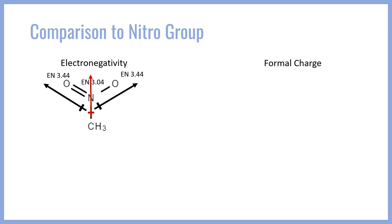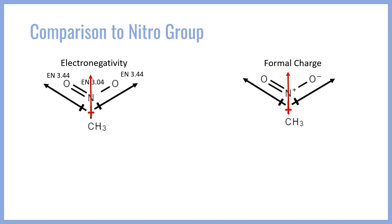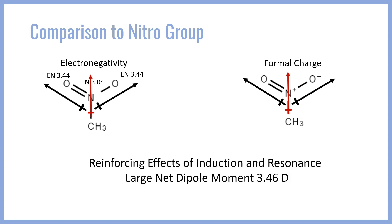Now, if we consider formal charges for the nitro group, nitrogen carries a formal positive charge and oxygen carries a formal negative charge. Due to the equivalency of the two N–O bonds, either oxygen could carry that formal negative charge. So the dipoles from formal charges are equal and both point away from nitrogen towards oxygen. They vector-sum to give a straight molecular dipole indicated by the red arrow. Notice that here, unlike in carbon monoxide, the electronegativity and formal charge effects constructively interfere with one another rather than destructively interfering.